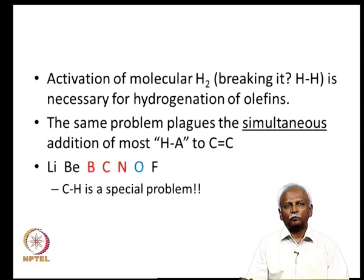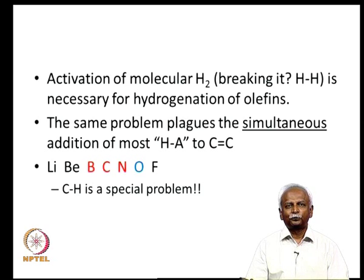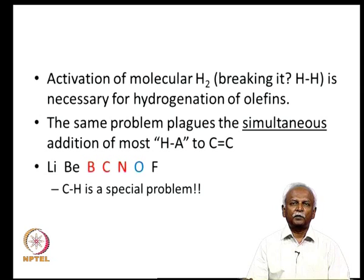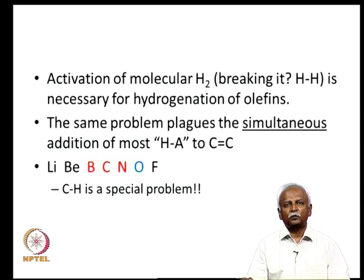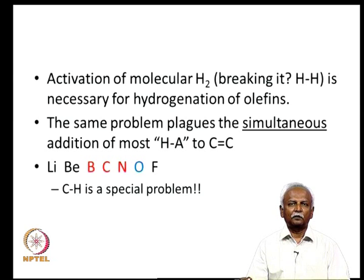The same problem plagues the simultaneous addition of most species like HA to a carbon-carbon double bond. If you want to add HA to a double bond, you need a catalyst, especially when the second atom is not very different in electronegativity from hydrogen. Elements like lithium, beryllium, and fluorine have large electronegativity differences from hydrogen, so addition of those molecules — lithium hydride and hydrogen fluoride — does not have a serious problem. But for boron-hydrogen or nitrogen-hydrogen species, a catalyst is needed because the polarity difference is not large. CH activation is a very difficult problem and will be dealt with in a separate class.